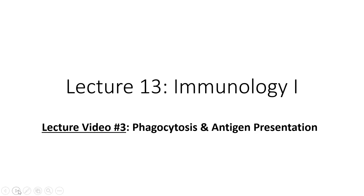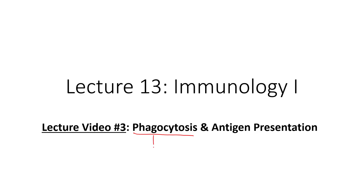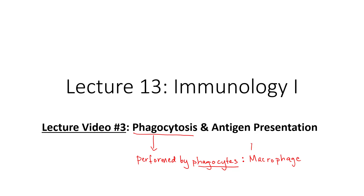In the last video we learned about who the phagocytes are. Do you remember who the king of the phagocytes is? That's right, the macrophage. Who else is a phagocyte? Neutrophils. So phagocytosis is performed by phagocytes — classes of leukocytes subcategorized as phagocytes, meaning they do phagocytosis. So the macrophage, the neutrophils, dendritic cells, and eosinophils.